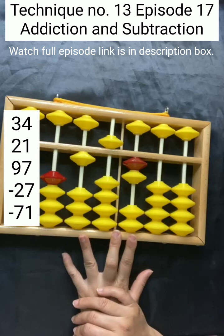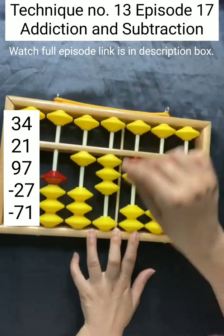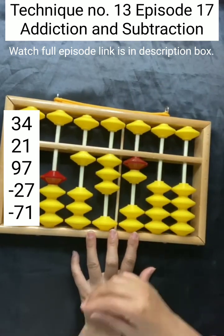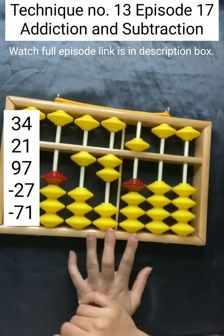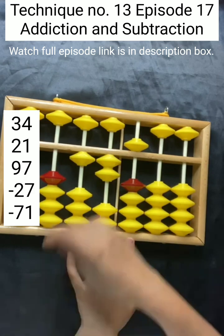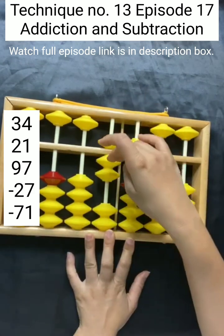Next is reduce 27. To reduce 20, you have to borrow this 50, and for seven, this is three step: reduce 10, add 5, reduce 2. Last one is reduce 71. To reduce 70, three step: reduce 100, add 50, reduce 20, and for one it is one.